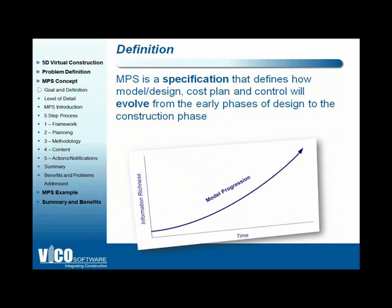The MPS is a specification that defines how the model and design, cost plan, and schedule will evolve from the early design phases all the way to the construction phase. During that time frame, from start to finish, the information richness — the level of detail — will increase, and that is what we call the model progression.